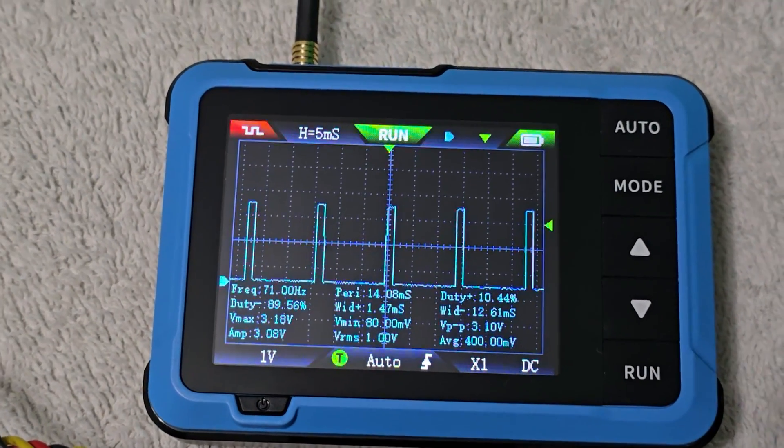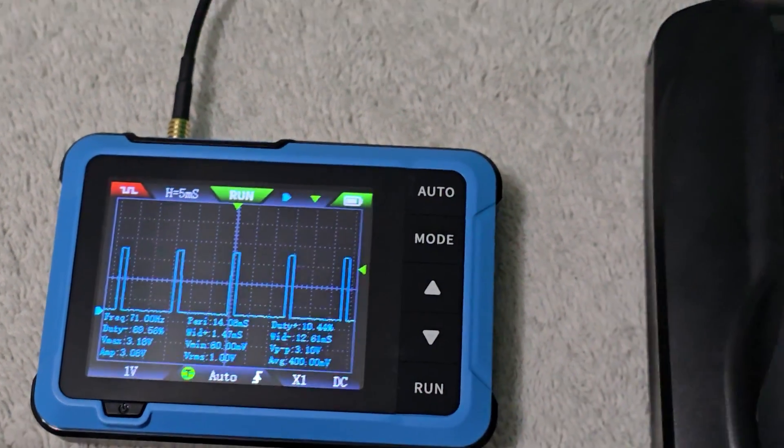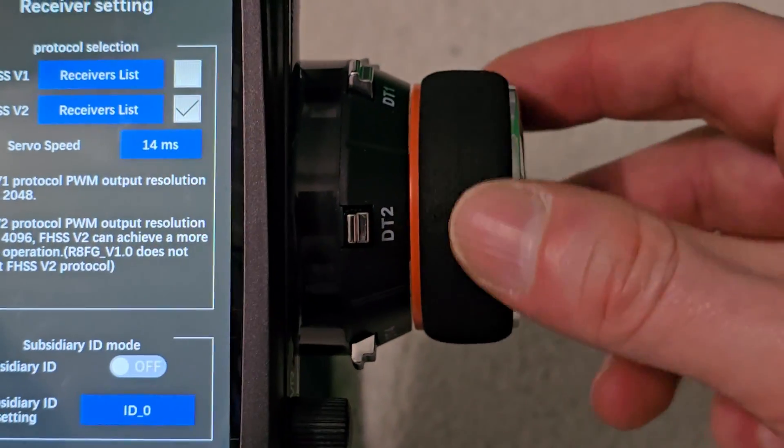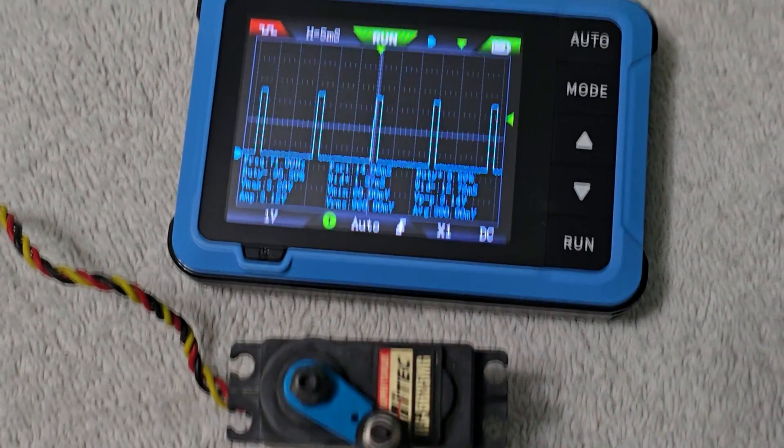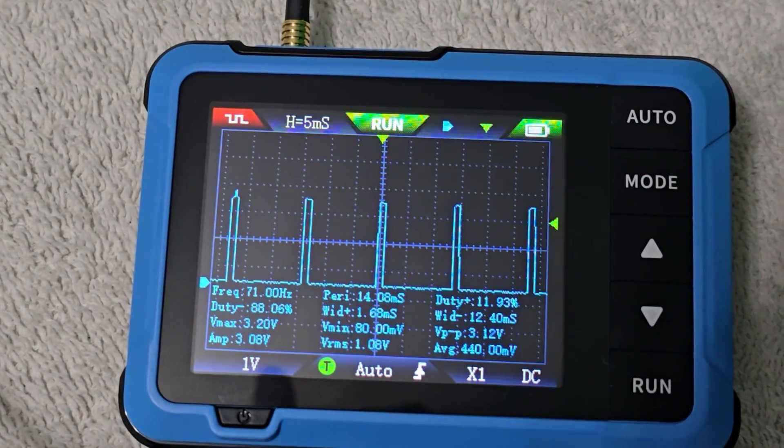Now I want to show you what happens when I rotate the steering wheel. As I rotate it, you can see the servo moving, but also look what happens to the graphs.